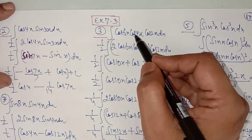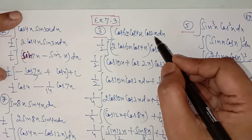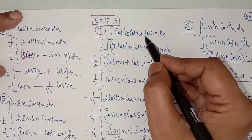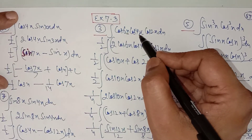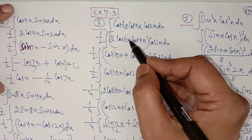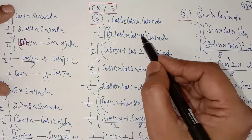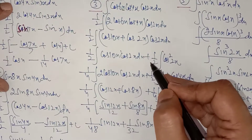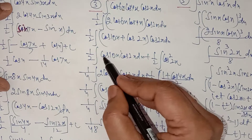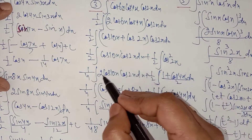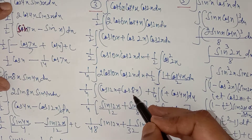Now we have the product of three trigonometric functions: cos 6x · cos 4x · cos 2x — arranged in decreasing order of angle so the problem of negative signs does not arise. Take cos 6x · cos 4x first, multiply and divide by 2. Use the formula 2cosA cosB = cos(A+B) + cos(A-B), giving cos 10x + cos 2x. Then multiply and divide by 2 in both terms again. 2cos 10x · cos 2x gives cos(10x+2x) + cos(10x-2x) = cos 12x + cos 8x.